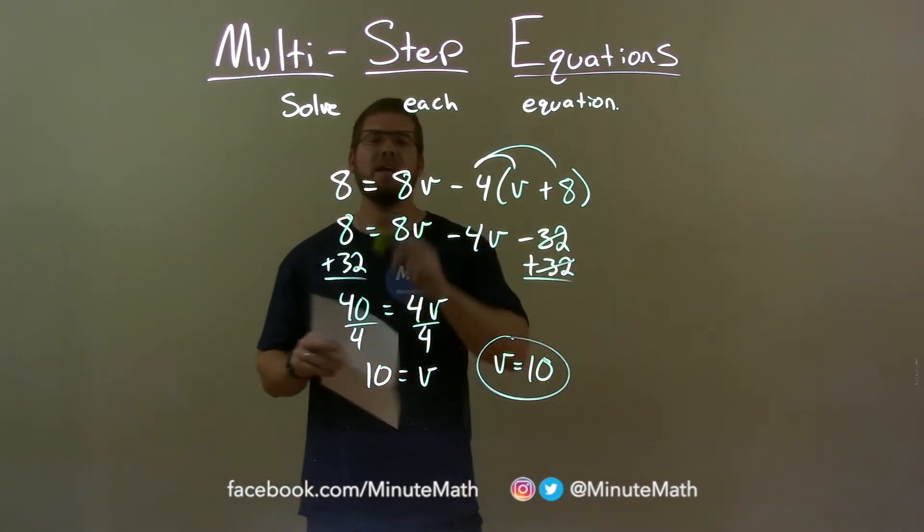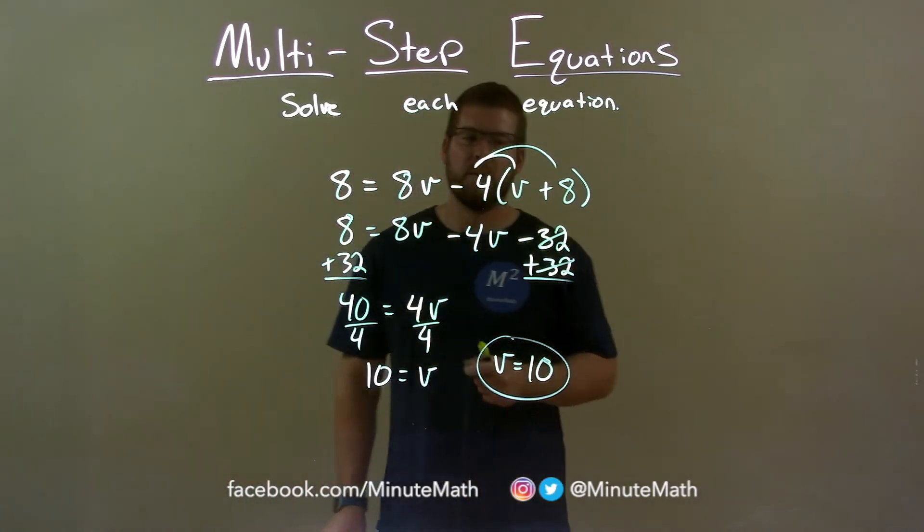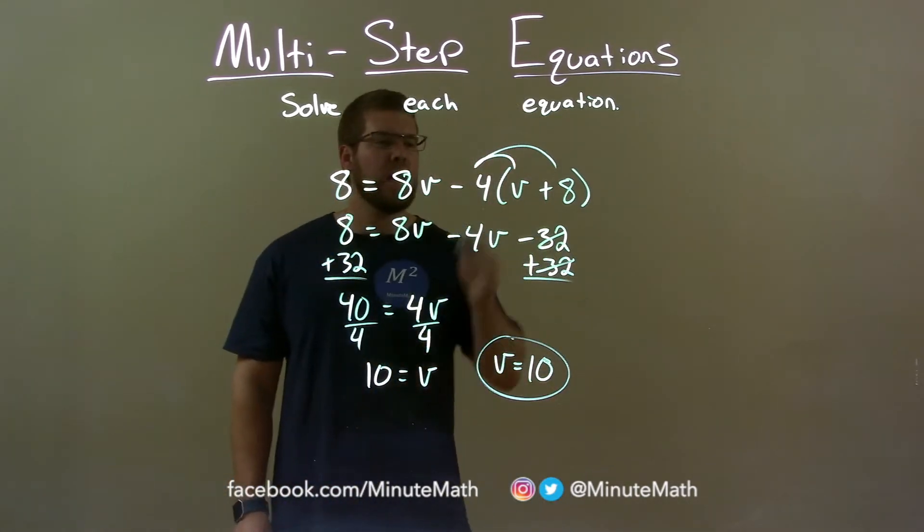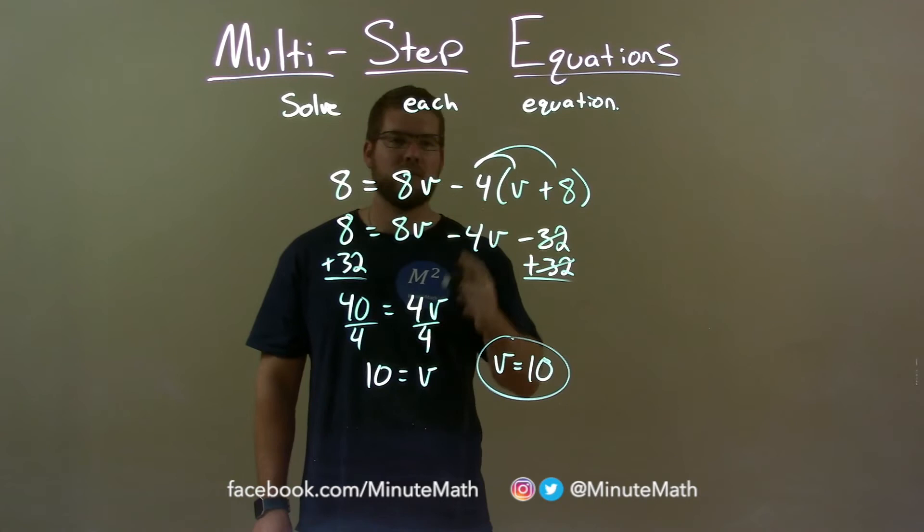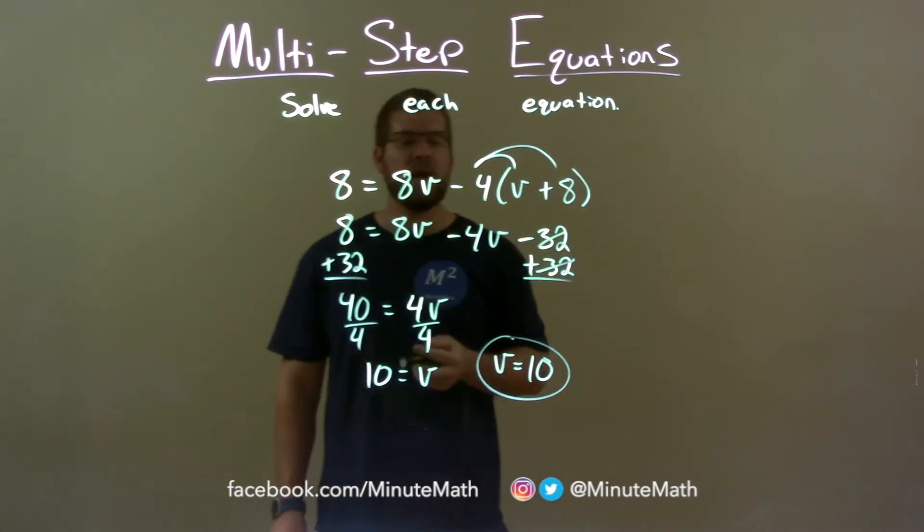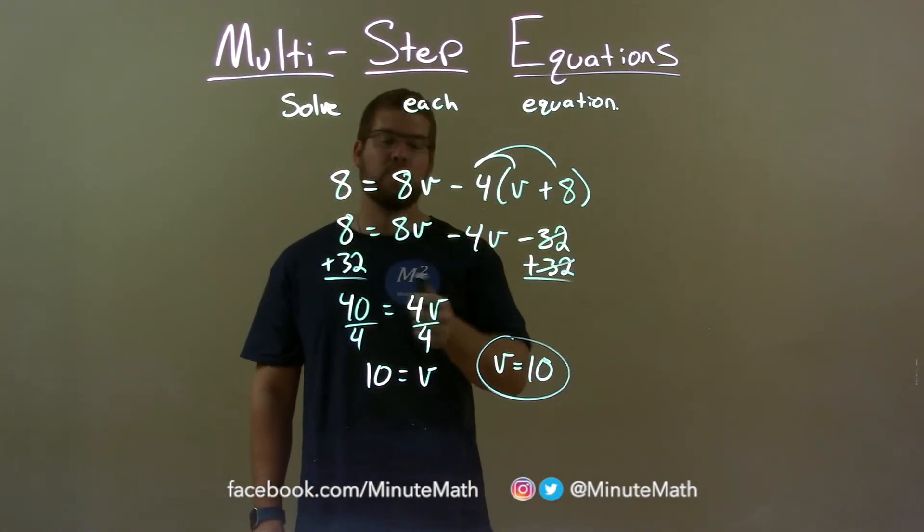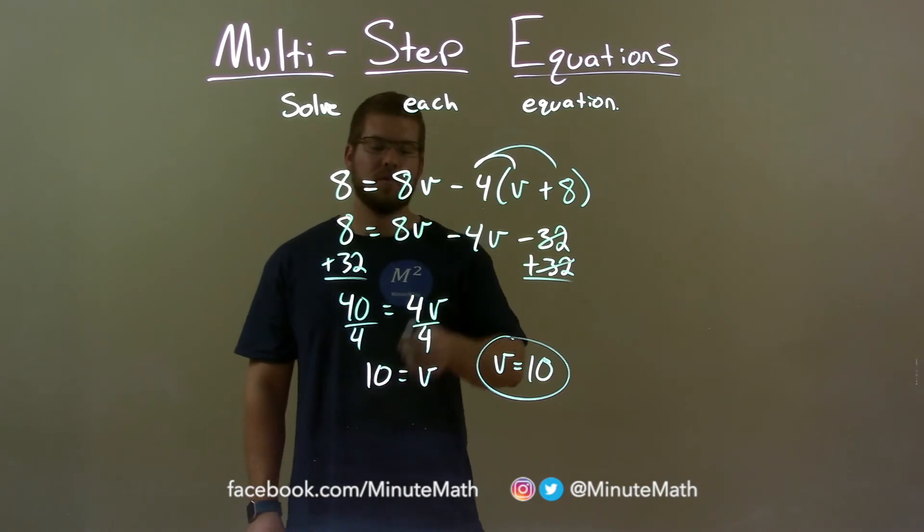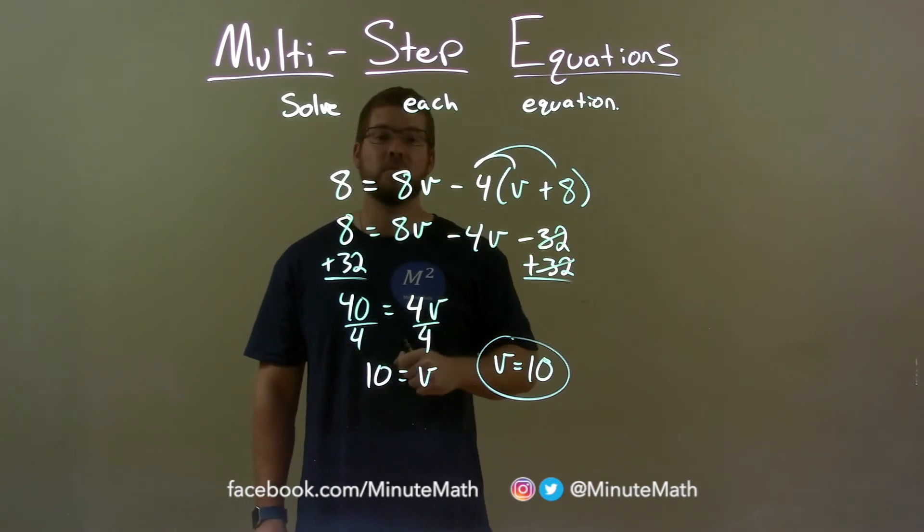Quick recap. We're given 8 equals 8v minus 4 times v plus 8 and with this solve for v. I distribute the 4 to both parts, making sure to bring the subtraction with it. Then combine my like terms and got 40 equals 4v, divided 4 to both sides and v is now by itself and it's equal to 10.